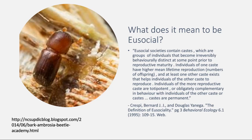A eusocial insect is defined as an insect which lives in a colony. This colony is divided into different groups called castes, and each caste plays a distinct role within the colony. Individuals of one caste have a higher reproductive capacity than those in other castes. The less reproductive individuals will help raise the offspring of the more reproductive caste. These castes are permanent, meaning an insect would not move to another caste at a later time.